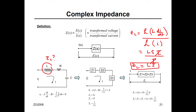It doesn't matter what your inductor is in any loop, any circuit, any electrical system — the complex impedance for any inductor is going to be the inductance constant times S. This is what you need to remember from now on. You don't have to derive it; this was just for understanding.